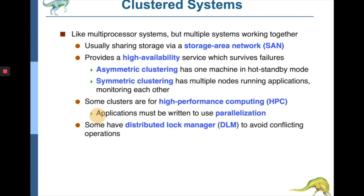If we can use multiple processors on a single chip, can we use multiple systems on different chips? For example, computers in a lab, desktops at home, or laptops — can we use them together to solve one problem? Yes, and that is called a clustered system. Clustered systems are typically available on a LAN, but more generically, they can share a storage area network (SAN), which provides accessibility to each individual processor working on the same problem, providing high reliability services that survive a failure.